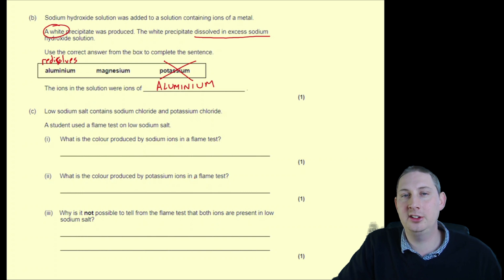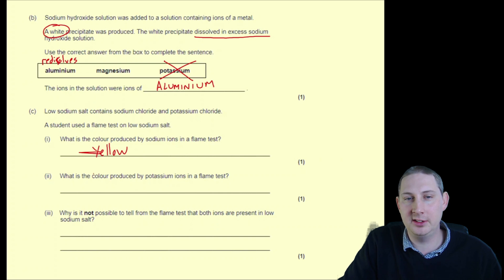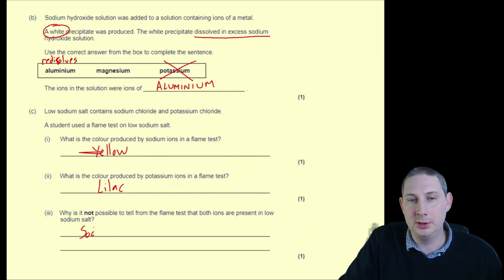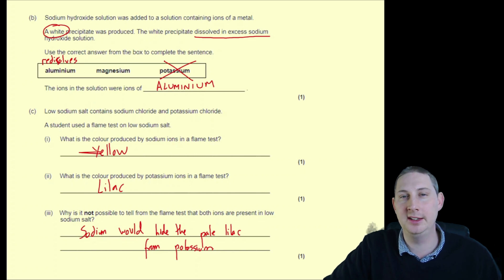Low sodium salt contains sodium chloride and potassium chloride. A student used a flame test on low sodium salt. The colour produced by sodium ions in a flame test is yellow; the colour produced by potassium ions is lilac. It is not possible to tell from the flame test that both ions are present because sodium's very intense bright yellow would hide the pale lilac from potassium.